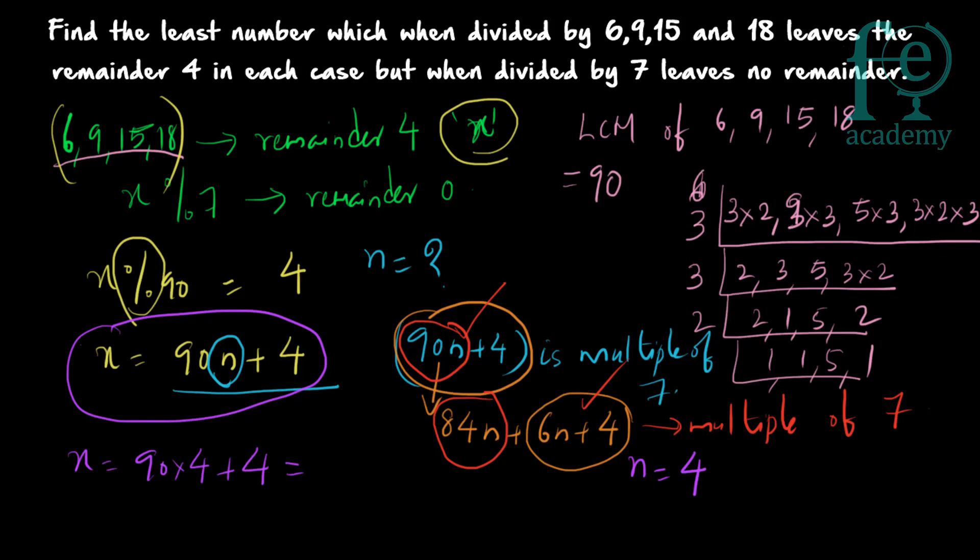Once we get n = 4, we can find x: x = 90×4 + 4 = 360 + 4 = 364. So the least number is 364.